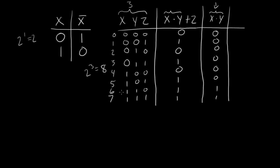There you have it — a three-variable truth table with eight rows, three inputs, and two output columns. The second column is just an intermediate output, useful for computing the final result step by step. Use intermediate columns to make sure you're doing it correctly — do one thing at a time and you're more likely to succeed.